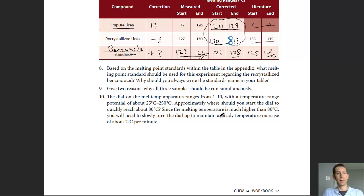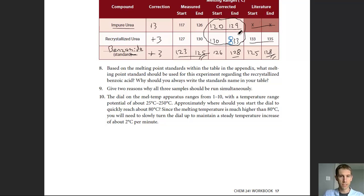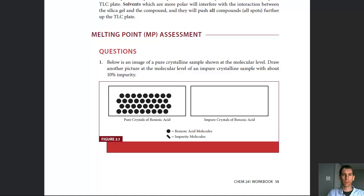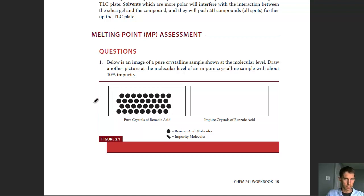Now we can do a TLC analysis to see if we can actually see the impurity. Before jumping into TLC analysis, let's consider how melting point and TLC are interrelated. If we have pure crystals of benzoic acid, approximately 40 molecules make up that crystalline structure. If we have 10% impurity, that means roughly 4 impurity molecules mixed in with 40 benzoic acid molecules — those impurities disrupt the crystal structure and affect the melting behavior.